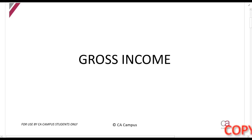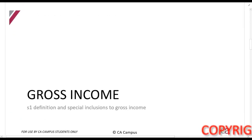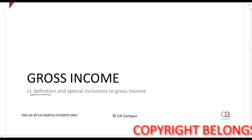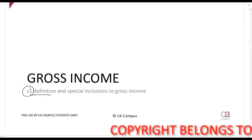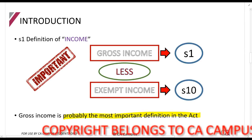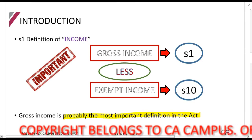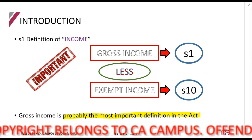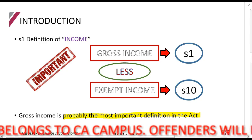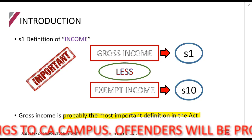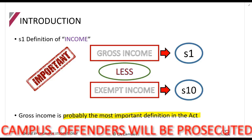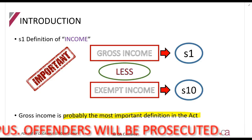Welcome to this lecture on Gross Income. Gross income is basically a definition that you can find in Section 1 of the Act, and it is probably the most important definition in the Act. The reason for this is because gross income is the section that tells us, for the majority of transactions or events that take place, what amounts need to be included in our gross income — and if it's included, it basically means what amounts we are going to potentially tax.